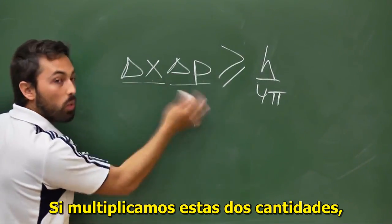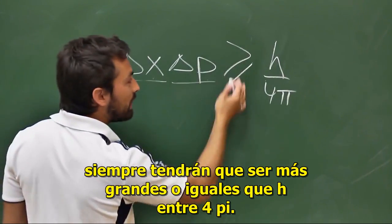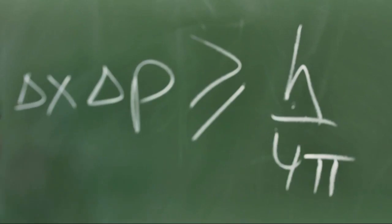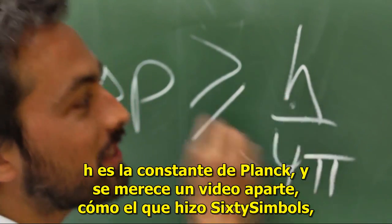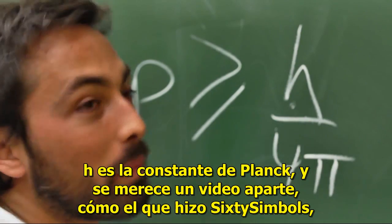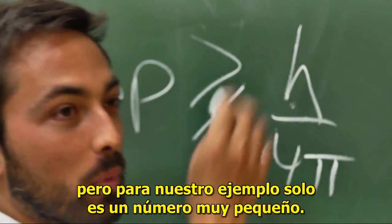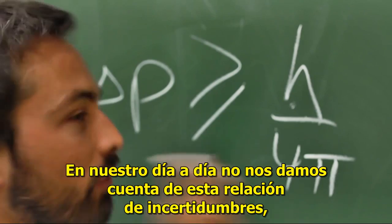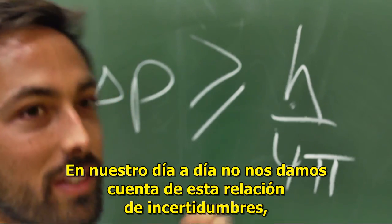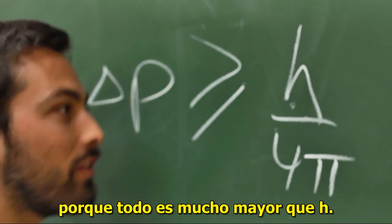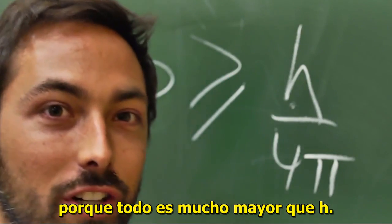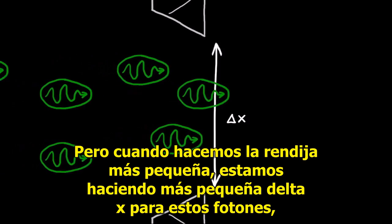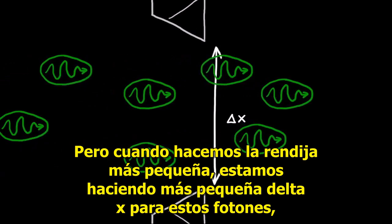If you multiply those two quantities together, they must always be greater than or equal to h on 4 pi. Now h is Planck's constant — that deserves a video all to itself. But for our purposes, it's just a very small number. So in our everyday lives, we don't come up against this uncertainty relation because everything is much, much bigger than h. But as we narrowed the slit, we were decreasing delta x for those photons.